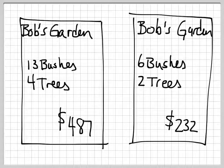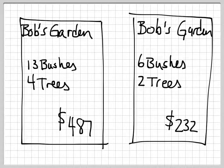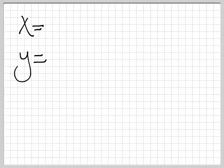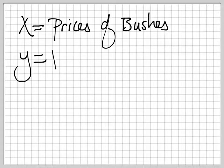The way we're going to handle this is we're going to have to come up with a system of equations. So we're going to come up with some variables. Generally speaking, we use x and y. And what we're trying to figure out is the price of the bushes and the price of the trees. So let's let x be the price of bushes and y be the price of trees.